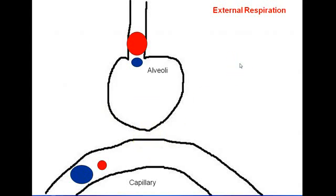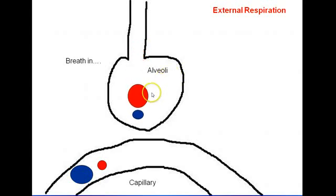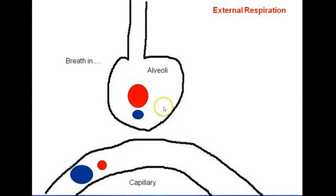Now let's start with you taking a deep breath in. When you take a deep breath in, you're going to breathe in oxygen and very little CO2. That means the air in the alveoli is going to have a high partial pressure of oxygen and a low partial pressure of carbon dioxide.